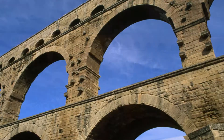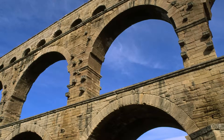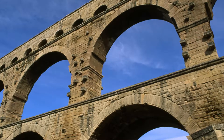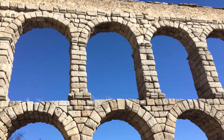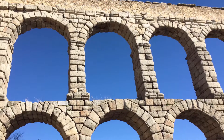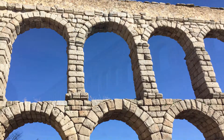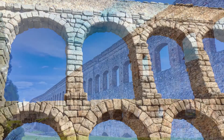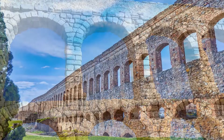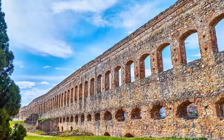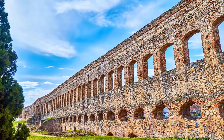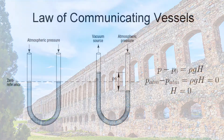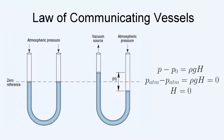But deep valleys created obstacles. While bridges and arcades were used to overcome this in some areas, these were costly structures and were impractical for very wide expanses. Instead, Roman engineers utilized an understanding of fluid mechanics that had been known since the pre-Greek eras: the law of communicating vessels.